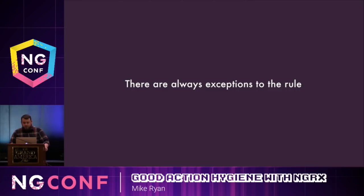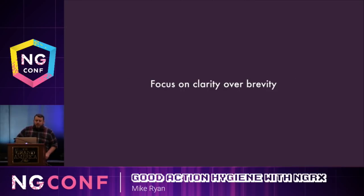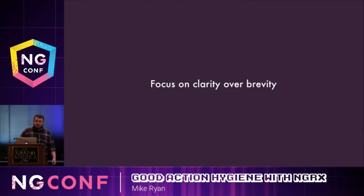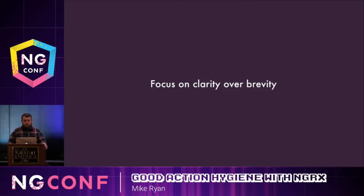I want to talk about some strategies for building good action hygiene into your process. The first strategy is to put clarity ahead of brevity. This is really a driving force for NGRX — it's why it requires you to be so explicit. By spending time up front and being very explicit about how side effects start or how state changes, you're going to save yourself time in the long run with how much easier it makes testing your application. This all goes towards writing more maintainable programs.